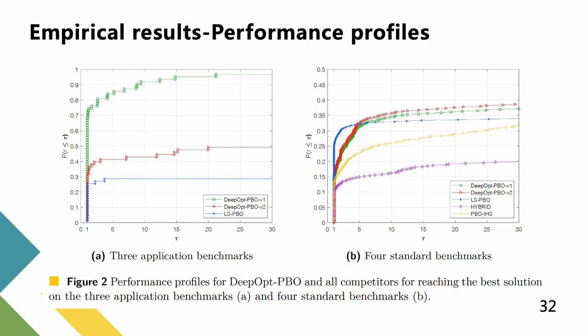Figure 2a demonstrates the superior performance of DeepOPT-PBO version 1 on the first three application benchmarks. It can be observed that DeepOPT-PBO version 1 has a higher probability of finding the optimal solution for each τ. In Figure 2b, LSPBO performs the best within a short time scale. However, DeepOPT-PBO version 2 surpasses LSPBO around τ equals 6 and maintains its leadership consistently.